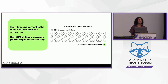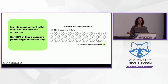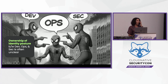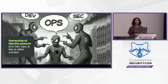As an industry we're actually really struggling with identity security, especially when it comes to the scope of how many permissions we grant that are not being used. Only two percent on average of all the permissions that we're granting are actually needed and being utilized. Some of the challenges include the fact that ownership of identity posture is not very clear between different groups, and that can lead to mistakes that stem from going too fast.